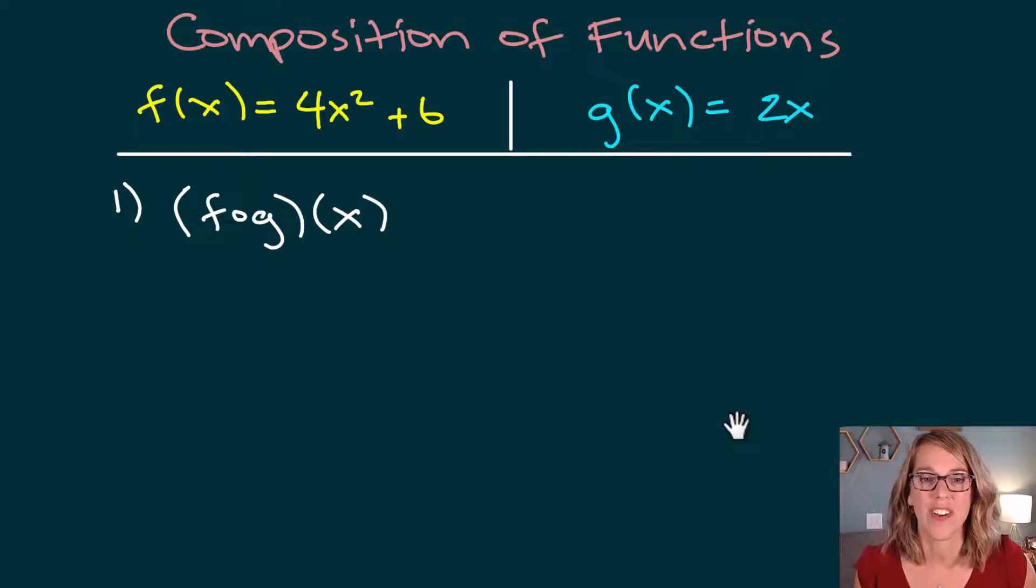Let's do some composition of functions. We've got f(x) is 4x squared plus 6, and g(x) is 2x. First of all, this notation with this little circle here means f composed with g, but I rewrite that as f of g of x.